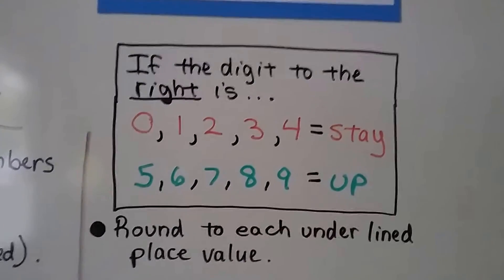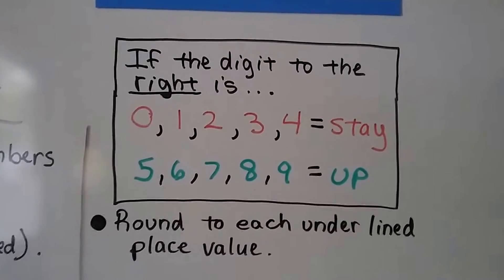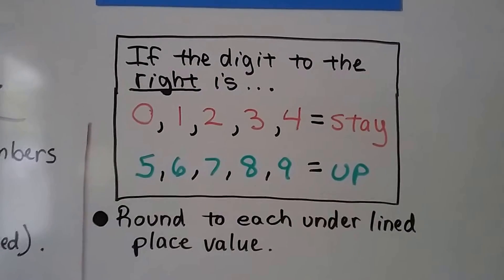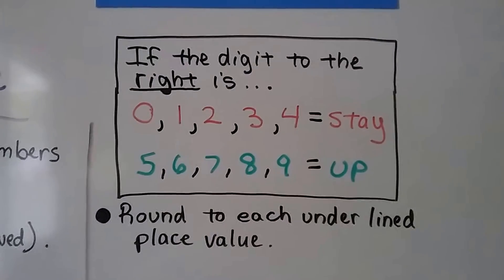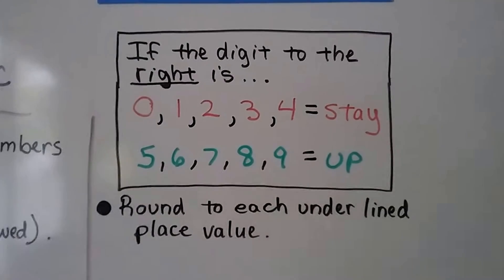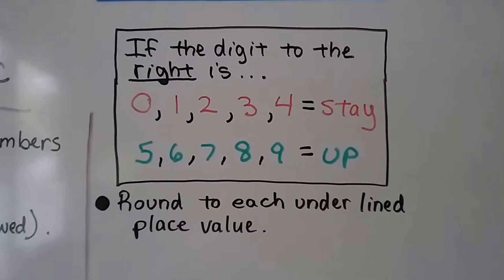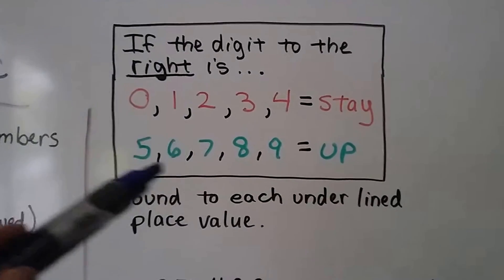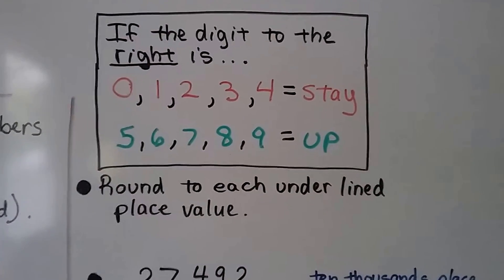If the digit to the right is 0, 1, 2, 3, 4, it stays. If it's 5, 6, 7, 8, 9, it goes up. So this is the rule. You might want to write that down if you don't know it already, but that's the rule to follow. We go by the digit to the right, and if it's one of these, it tells it what to do to stay or go up.